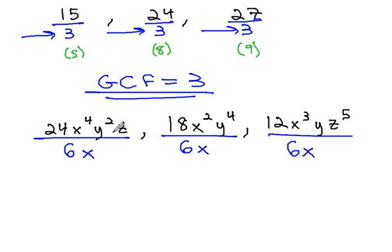All three also have a y. However, only two of them have a z. This means we cannot include the z as part of our greatest common factor.